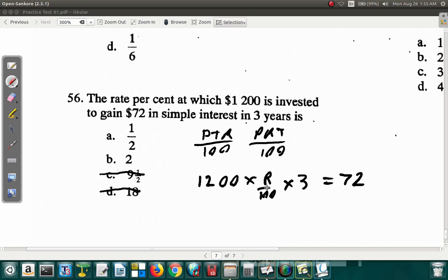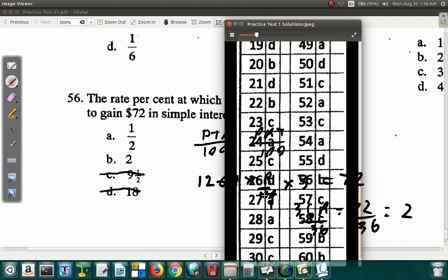But let's do the math and see what happens. You have 100 into 1200 is 12, 12 times 3 is 36. So 36 times R is equal to 72. Divided by 36, what's 72 over 36 is 2. So 56 supposed to be B. Question 56 is B.